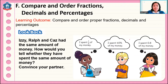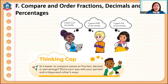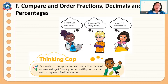If we compare money or any amount expressed as decimal, percentage, or fraction, all we need to do is change all of them into one form. You can use all as fractions, or all as percentages, or all as decimals.